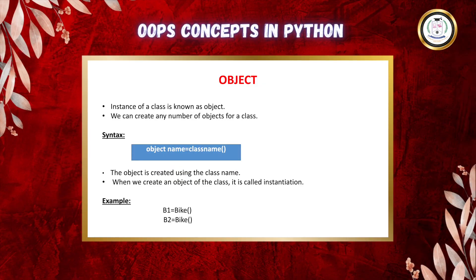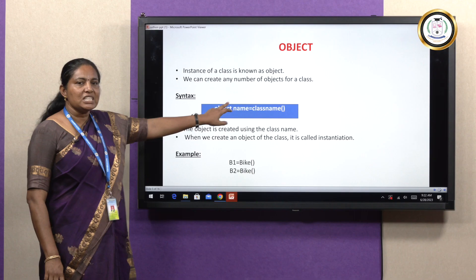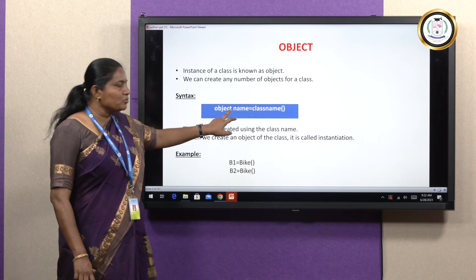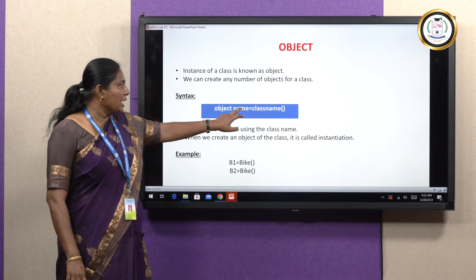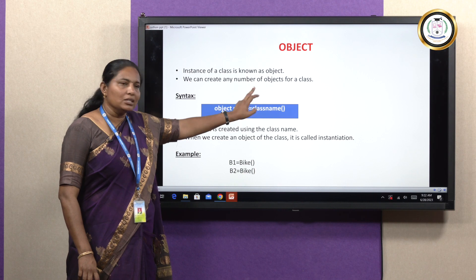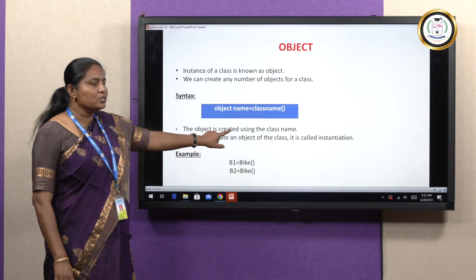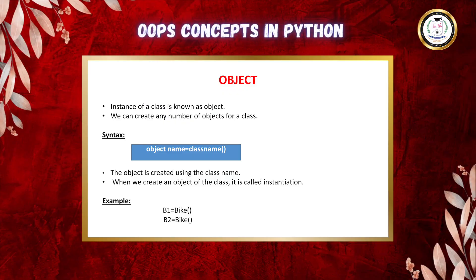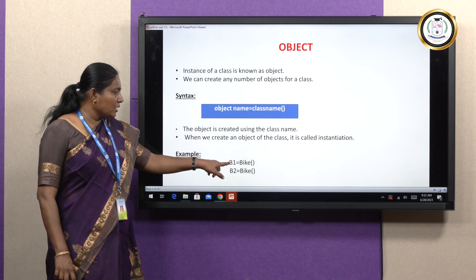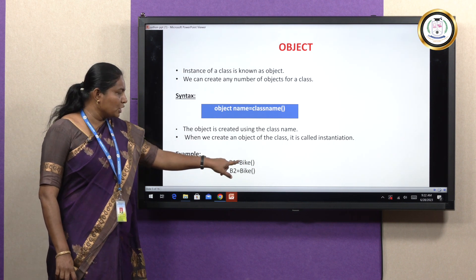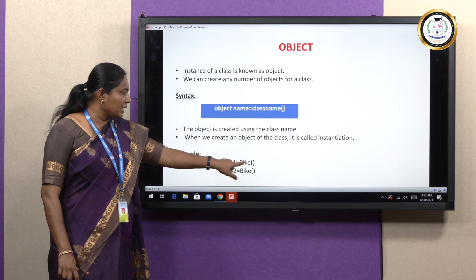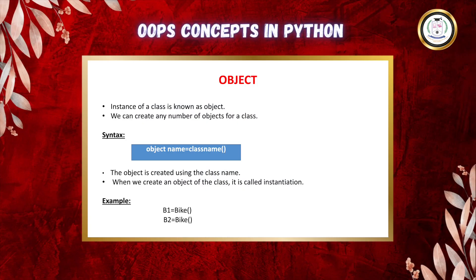The syntax for creating an object: object name is equal to class name. The object name is a user-defined name, and the class name is the corresponding class name. The object is created using the class name only. When we create an object of the class, it is called instantiation. For example, here B1 is the object name, equal to bike. We are creating an object called B1 using the class name bike.